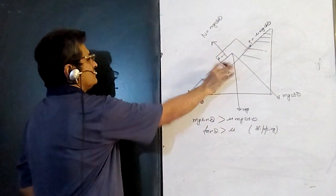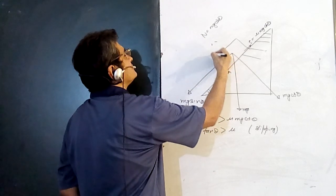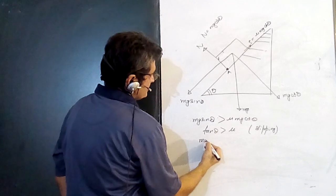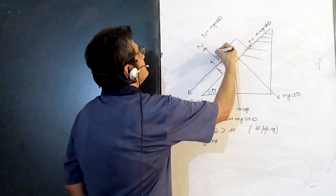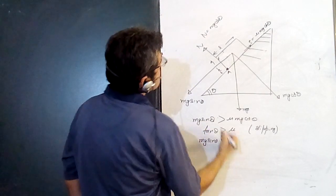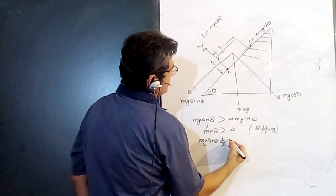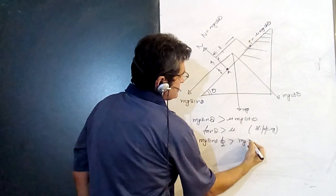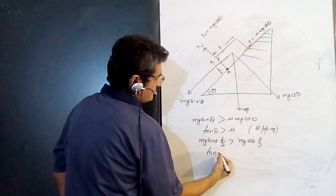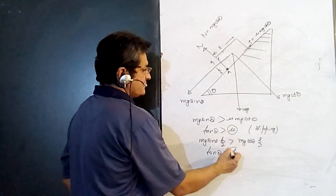Now for toppling on the wedge: N gets pushed to the corner and can no longer help. The block topples when the toppling torque mg·sin(theta)·(h/2) exceeds the anti-toppling torque mg·cos(theta)·(L/2). This simplifies to: tan(theta) > L/h is the condition for toppling, while tan(theta) > mu is the condition for slipping.